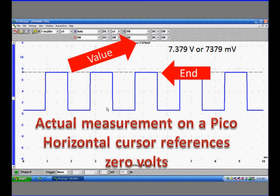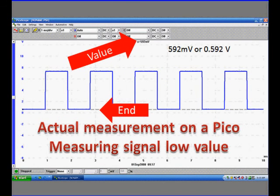So what that really is, 7.379 volts. Pretty accurate measurement. The accuracy really depends on how carefully you position it on the trace.